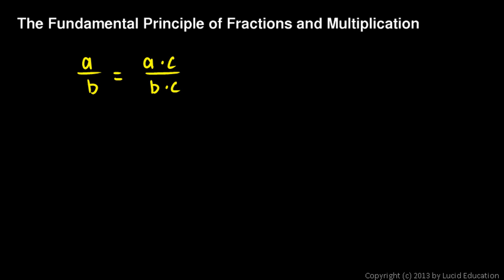And so you can see what we did. We took the numerator and multiplied it by c, and the denominator and multiplied it by c. And as long as you're multiplying by the same number, the result is a fraction that is equal to the original.